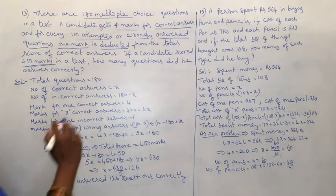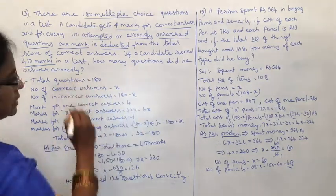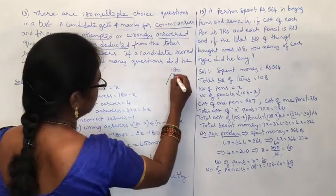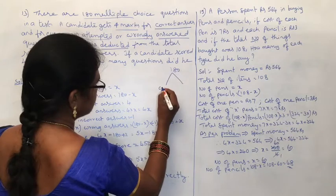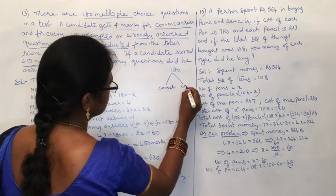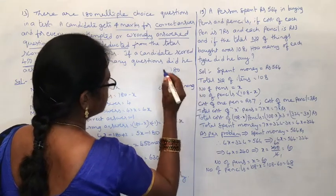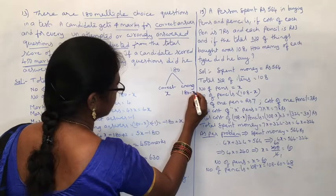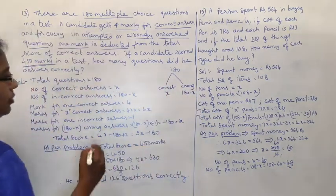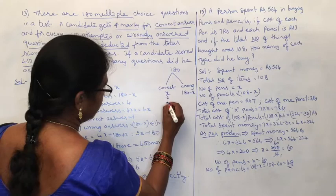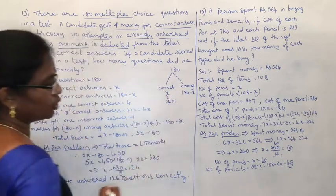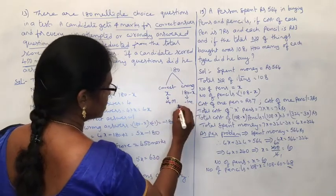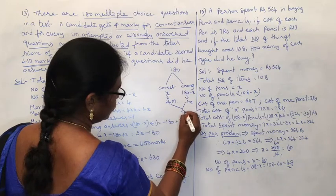The candidate scored 450 marks. How many questions did he answer correctly? Total questions are 180. Suppose correct answers are x, then wrong answers are 180 minus x. For correct answers, 4 marks each. Adding these gives the total score.